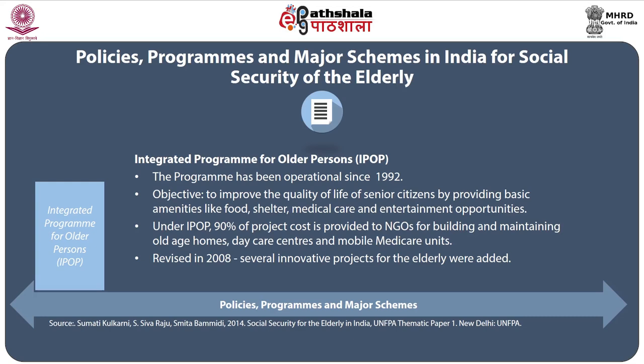The program underwent a revision in 2008, after which several innovative projects for the elderly were added, including day care centers for Alzheimer's or dementia patients, physiotherapy clinics, help lines, counseling centers, awareness programs for the elderly and caregivers, sensitization programs for children in schools and colleges, and formation of senior citizens associations. Financial support for capacity building in government and non-governmental organizations is also provided. After a situation analysis in 2011, the scheme was made flexible to cater to the needs of older persons of diverse types like destitutes, slum dwellers, and those living in inaccessible areas.